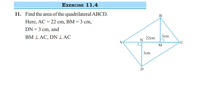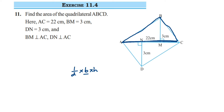The first one is the upper triangle ABC. We know that area of a triangle is half into base into height. The base here is AC — the whole AC — and AC value is given as 22 cm. The height here will be BM. BM is perpendicular, so that becomes the height, and BM is 3 cm. We know both the values and we are going to substitute to get the area of triangle ABC.